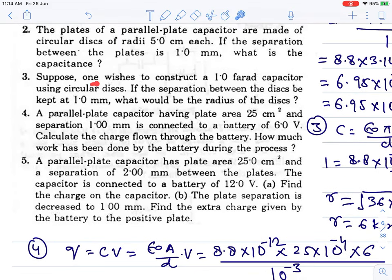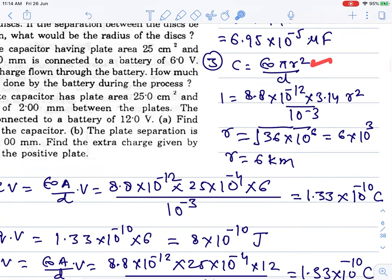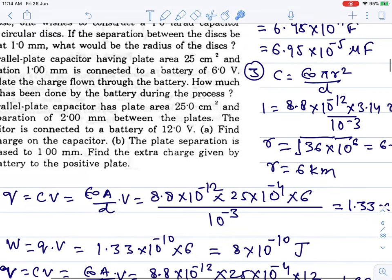Next question: Suppose one wishes to construct a 1 farad capacitor using circular discs. If the separation between the discs is 1 mm, what would be the radius? C = ε₀πr²/d. d is given, convert it to meters. F is given in SI units. We need to find radius r. Put the values in the formula and it comes out to 6 × 10³ meters, which is 6 kilometers radius. Diameter would be 12 km, so a very, very huge plate you need.